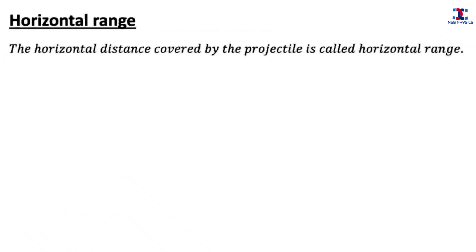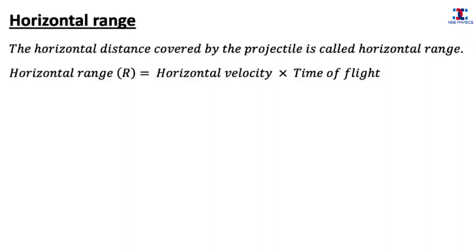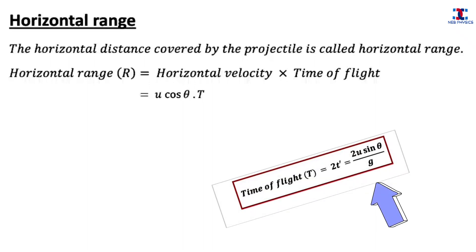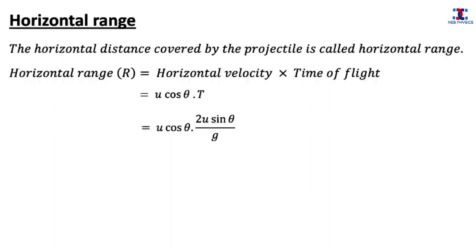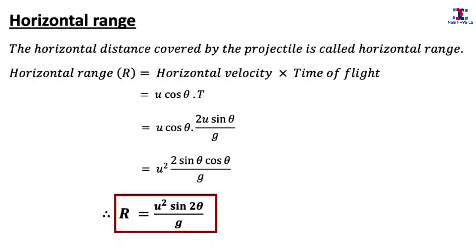Now let's derive the expression for horizontal range. The horizontal distance covered by the projectile is called the horizontal range. Since distance equals velocity multiplied by time, the horizontal range equals horizontal velocity multiplied by time of flight. Horizontal velocity is u cos theta and time of flight is T. Substituting the value of time of flight from the previous derivation and solving, we get the expression for horizontal range R equals u² sin 2theta divided by g.